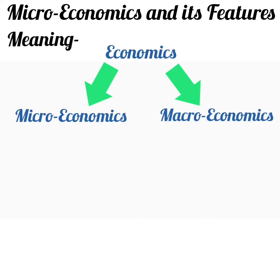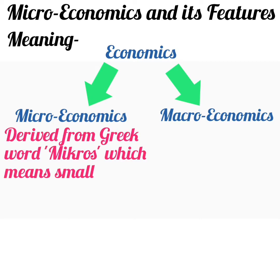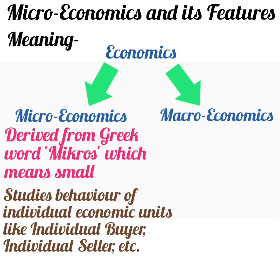What is microeconomics and what are the features of microeconomics? There are basically two branches of economics: microeconomics and macroeconomics. The word microeconomics is derived from the Greek word 'mikros', which means small. Microeconomics is the branch of economics which studies the behavior of individual economic units like individual buyer, individual seller, etc. Microeconomics deals with the study of economic issues related to such individual economic units.